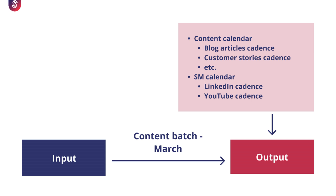In the same way that you will need templates and raw materials and logos as input, you also need a couple of other things for output. If you do blog articles, customer stories, or white papers, you should have a content calendar in place so that you can properly distribute your efforts. Also, you should have a social media calendar that needs to include both LinkedIn and YouTube, or any other channel that you plan to use in March for content distribution.